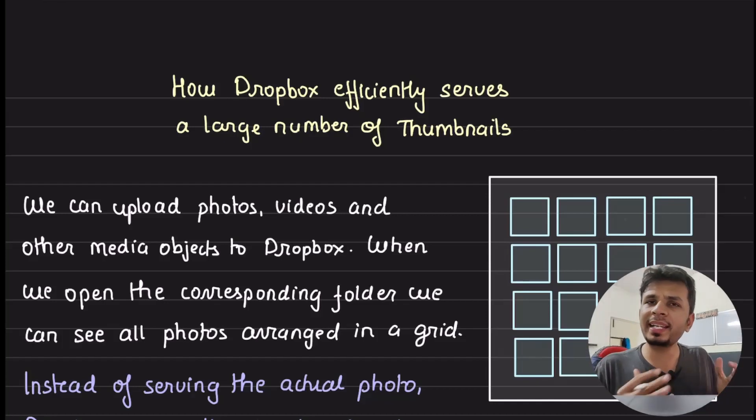A classic challenge that comes while building Instagram or Google Photos is about quickly and efficiently serving and rendering a large number of thumbnails. In this video, we take a look at an ultimate hack that Dropbox used to very efficiently serve a large number of preview thumbnails by streaming the response from the servers using chunk transfer encoding.